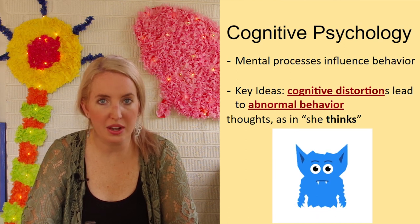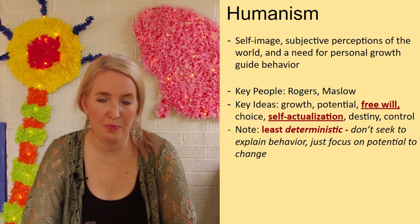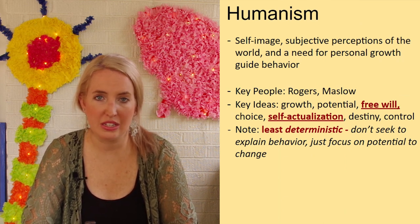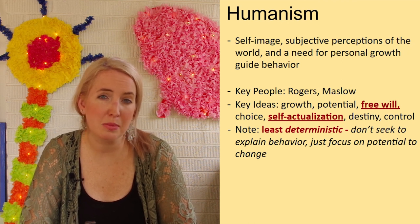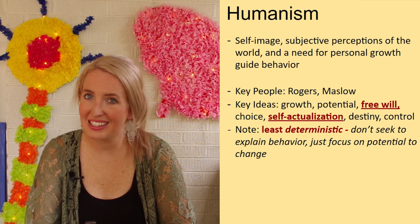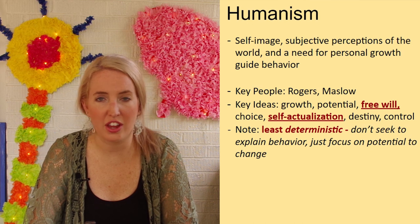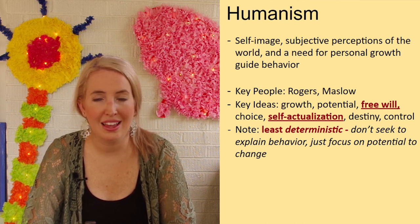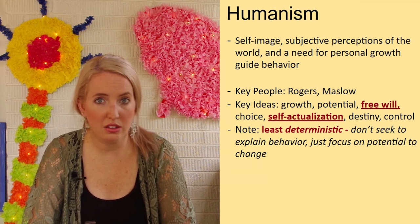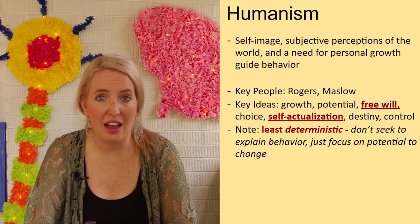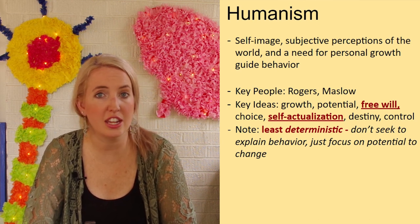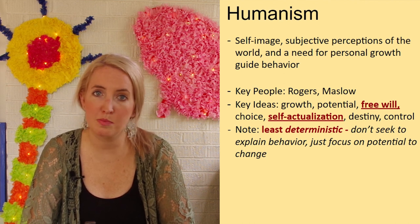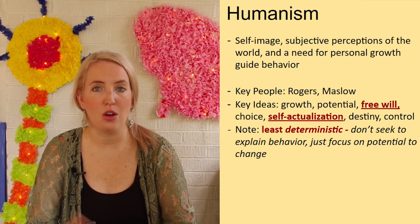Next we have the humanist perspective, started by Carl Rogers and Abraham Maslow. This field focuses on a person's potential and is probably the least deterministic perspective — it doesn't seek to explain past behaviors. Instead, humanists say this individual has unlimited capacity for growth. They have free will and the ability to change at any point in time. If the behavior we're seeing is making them unhappy, they have the capacity to change. Humanists also believe in self-actualization and Maslow's hierarchy of needs.